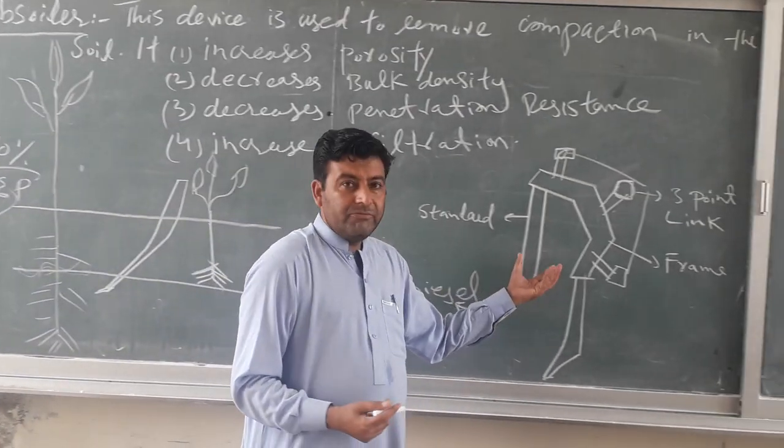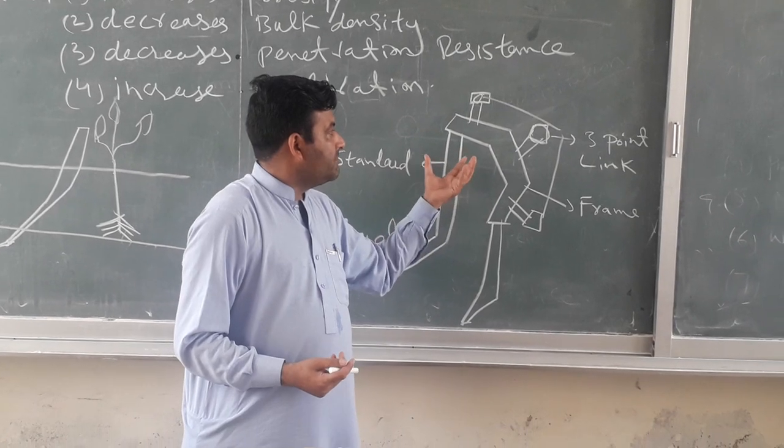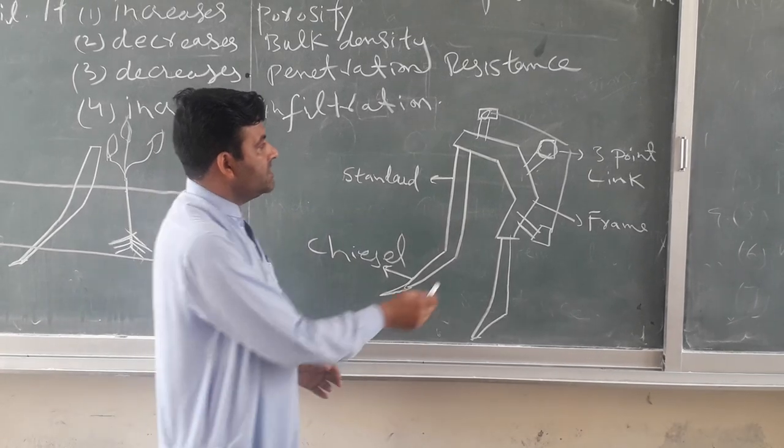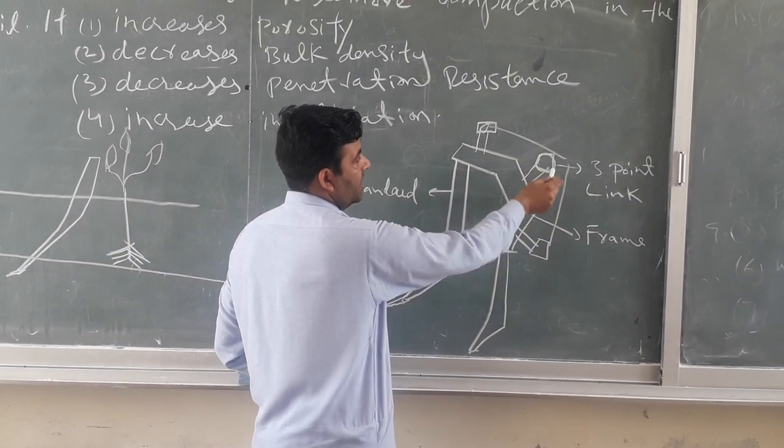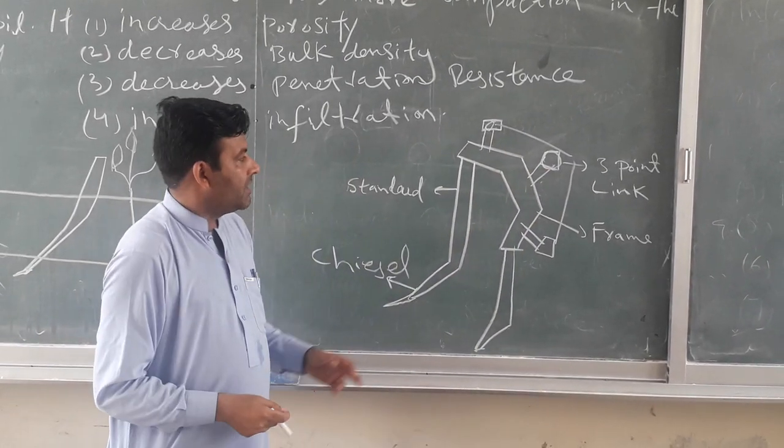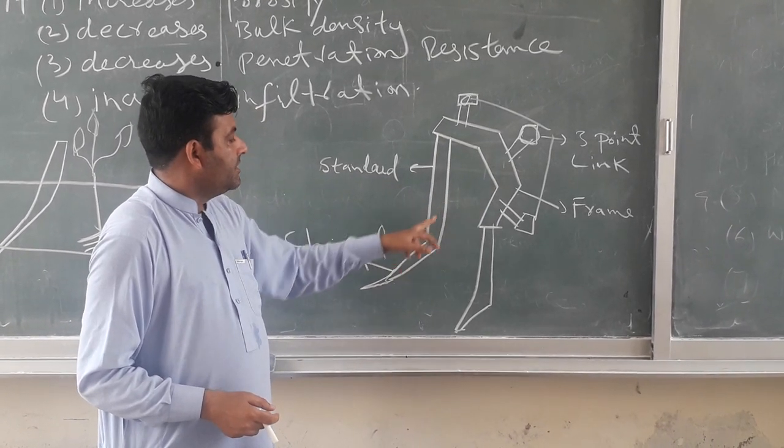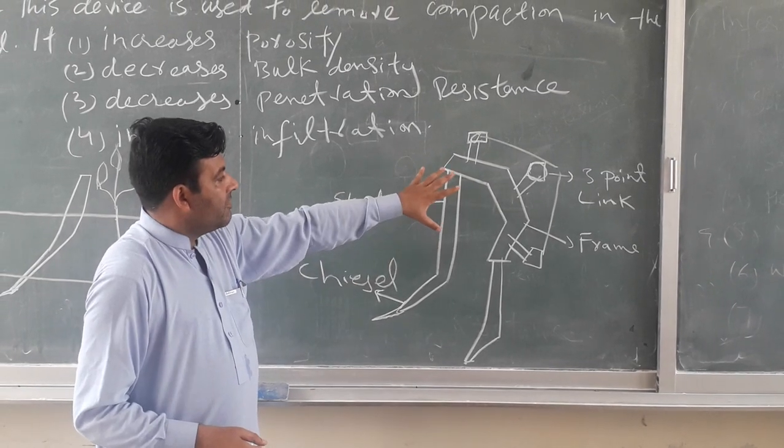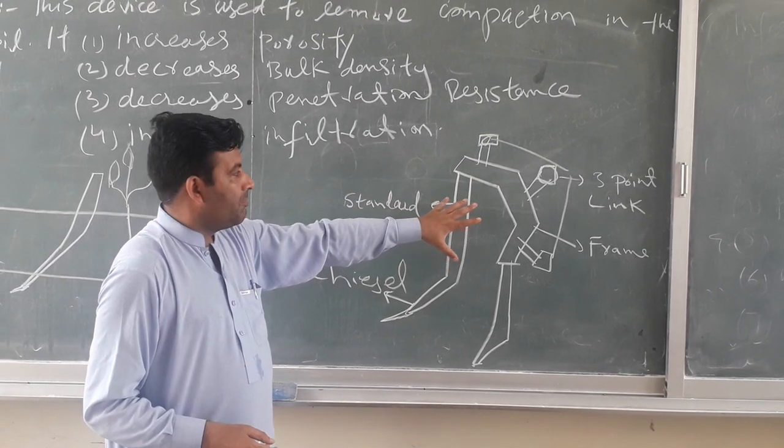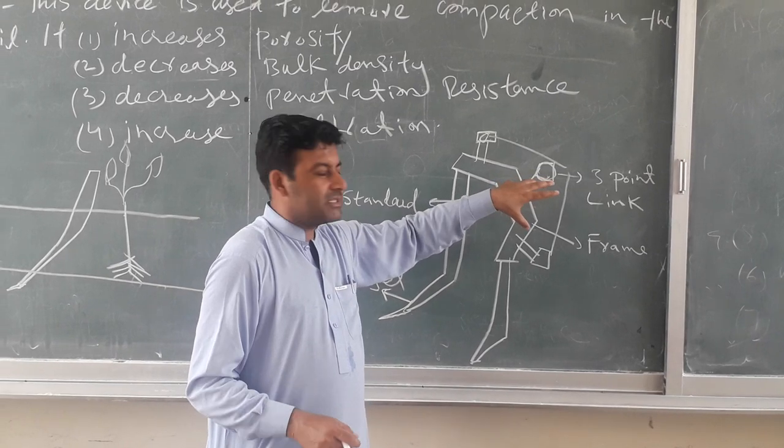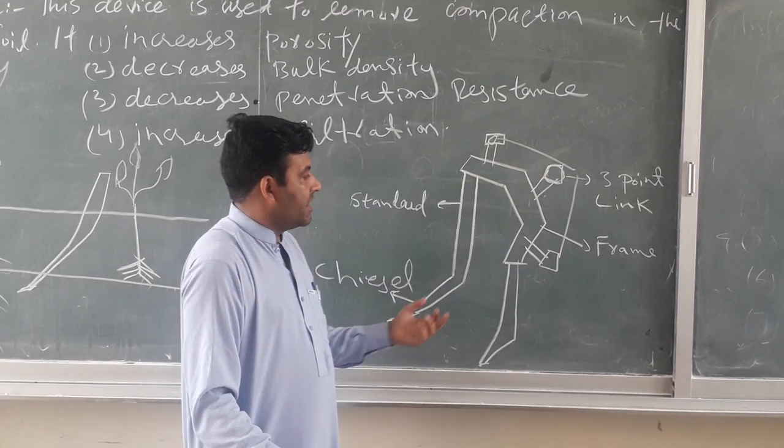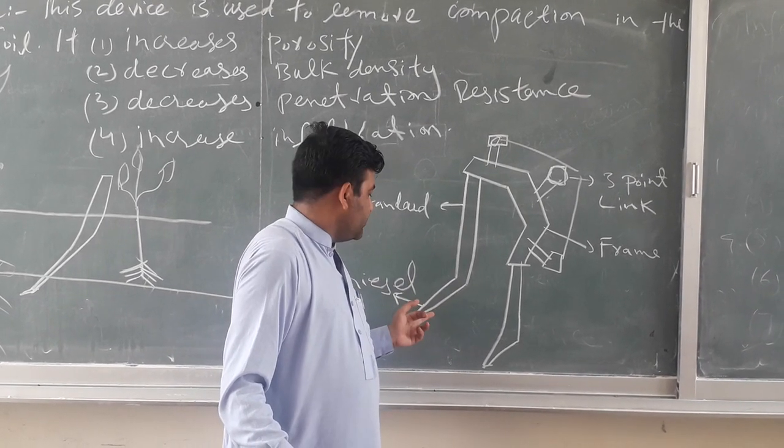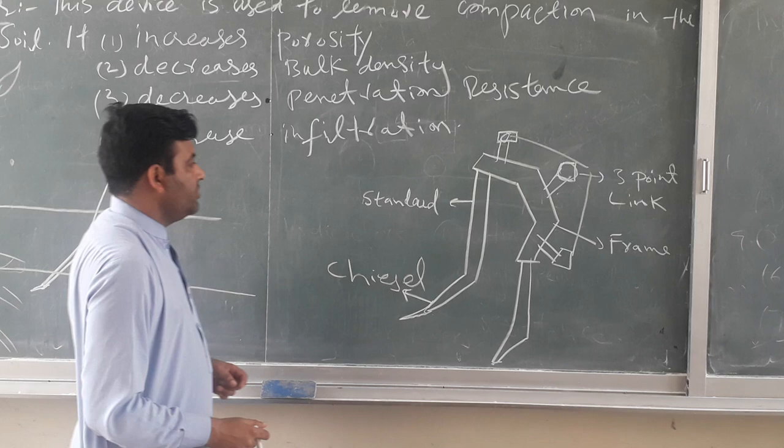This device has different parts. The structure is attached to the frame and standard, and the part that cuts the soil is called chisel. So these are four parts of this equipment: three-point linkage which we attach to the equipment frame, the standard, and the chisel which cuts the soil.